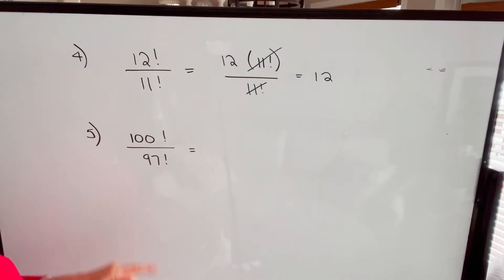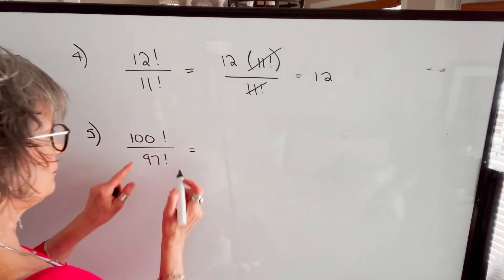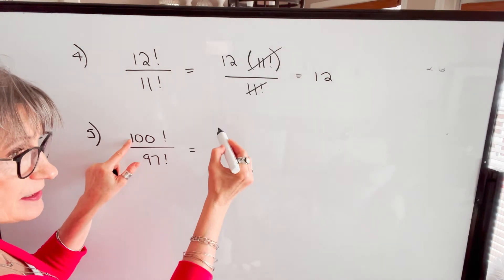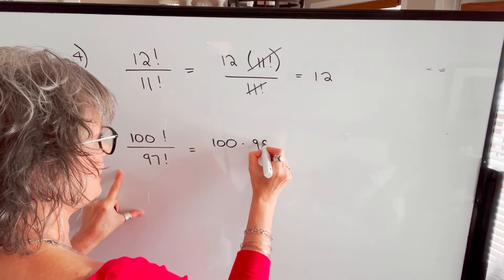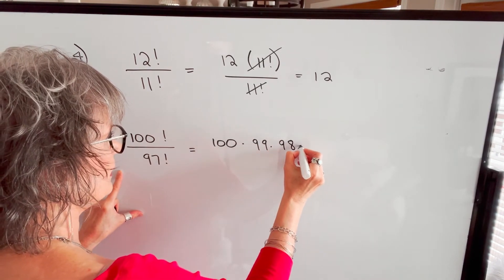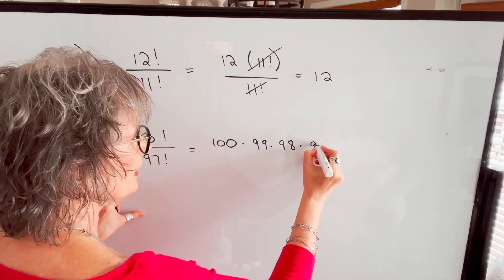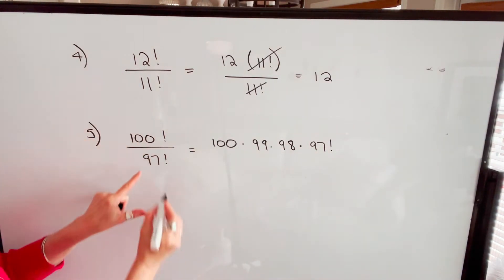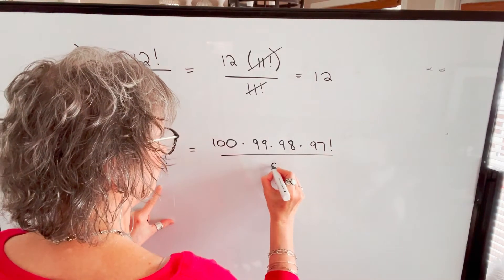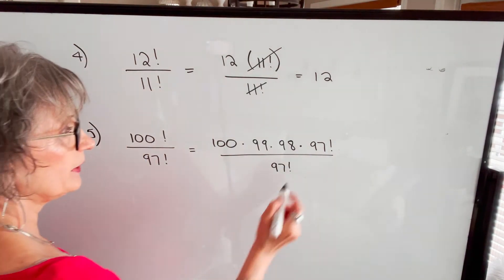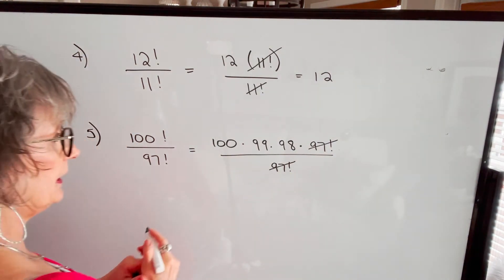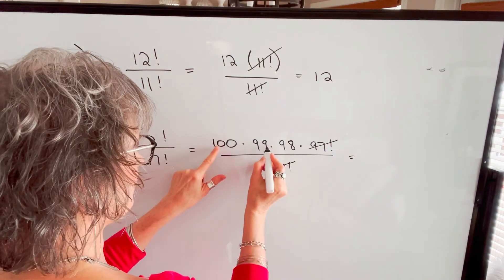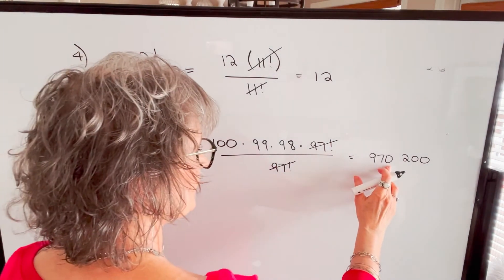In this example, we have 100 factorial divided by 97 factorial. So I'm going to multiply 100 times the next lowest number until I get to 97. That's going to be 100 times 99 times 98, and then from 97 down we can write as 97 factorial. We can cancel 97 factorial out of the numerator and the denominator, and then we multiply 100 times 99 times 98 to get 970,200.